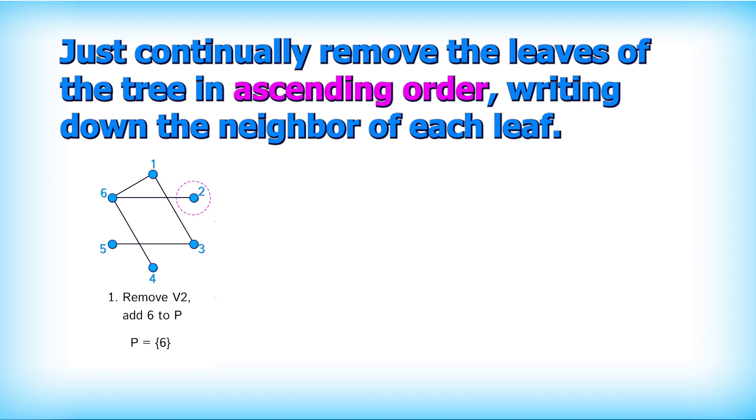Of course, there's only one of these and that is 6. Then the next smallest leaf is 4. So we remove that and the vertex it's connected to again is 6. So we write down 6 again. Removing the 4, the next smallest leaf is 5. It was connected to 3.